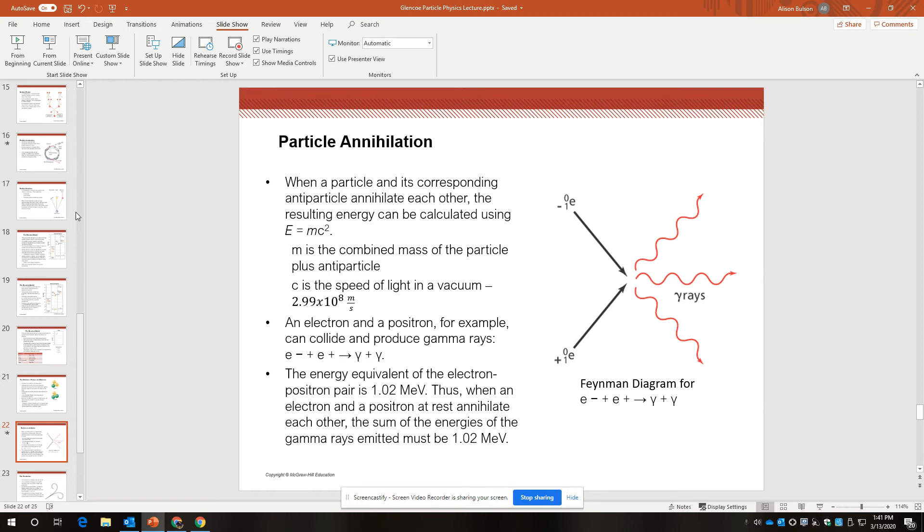The energy equivalent of the electron-positron pair at rest is 1.02 megaelectron volts. Again, we are using a bizarre unit, or bizarre to us, unit of energy of megaelectron volts or electron volts, because these individual particles have very small amounts of energy as measured in joules.